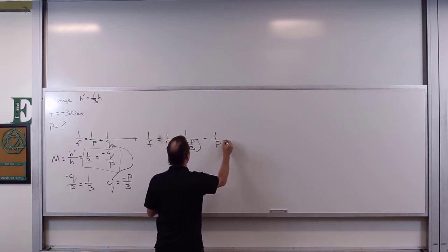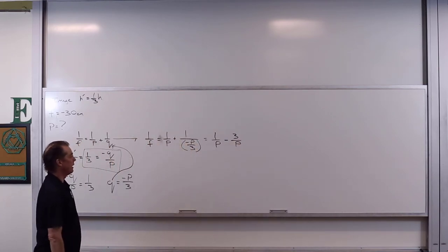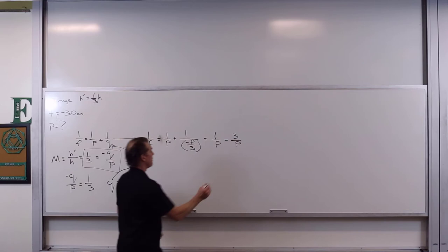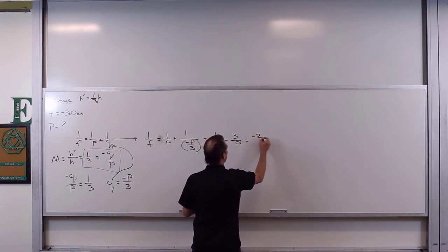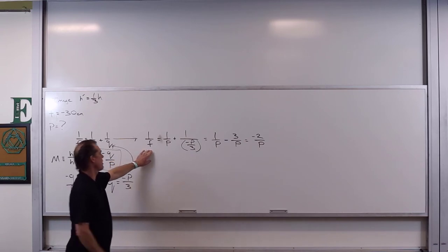So what can we write this as? We can write it as one over p minus three over p. That would be perfectly fine. Which would be what? That would be equal to negative two over p. What does that have to be equal to? Once again, that has to be equal to one over f.